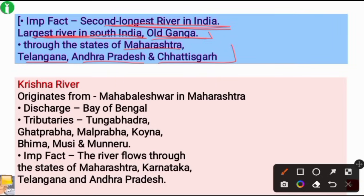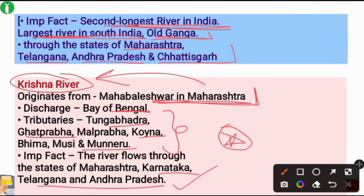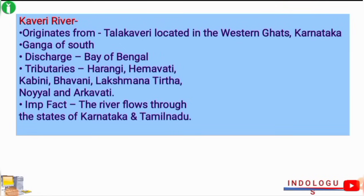The Krishna River originates from Mahabaleshwar in Maharashtra and discharges into the Bay of Bengal. Its important tributaries are Tungabhadra, Ghatprabha, Malaprabha, Koyna, Bhima, Musi, and Muneru. The river flows through the states of Maharashtra, Karnataka, Telangana, and Andhra Pradesh.